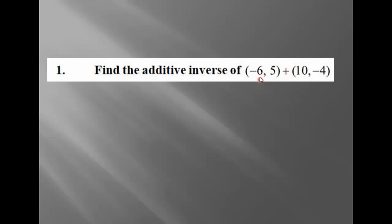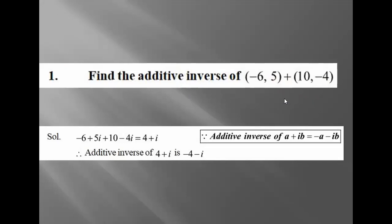Okay, so minus six plus ten — okay, these are the complex parts — plus minus four i. So here the real part: minus six, and from the five, one as kawali. The imaginary part here is five i.